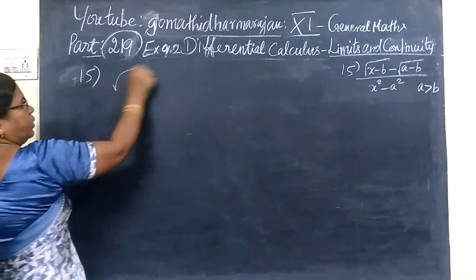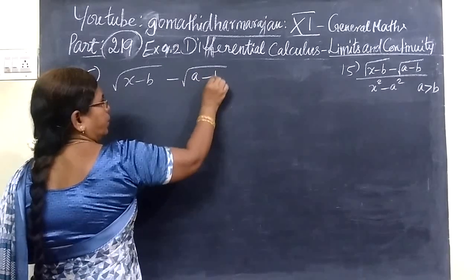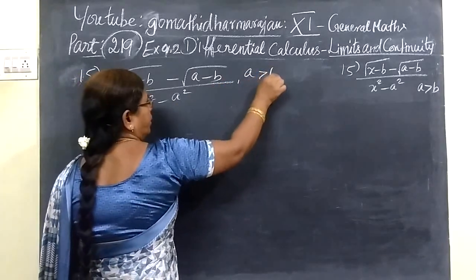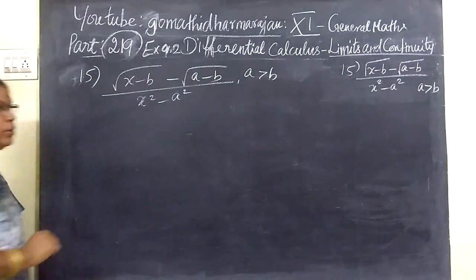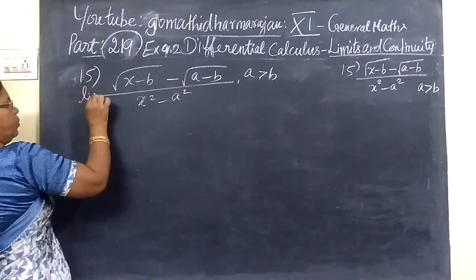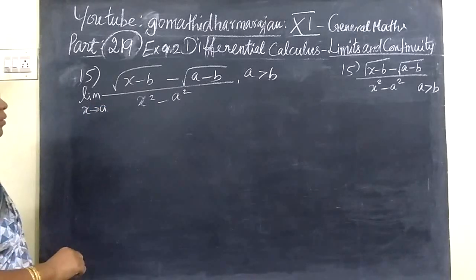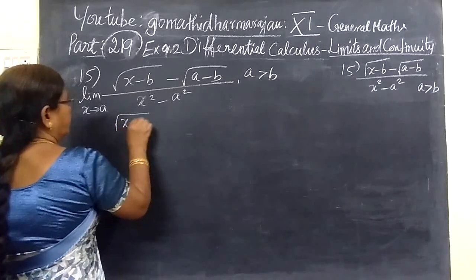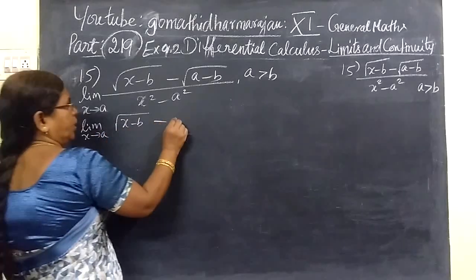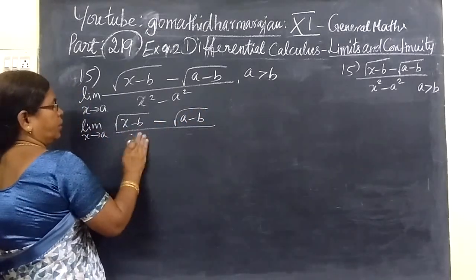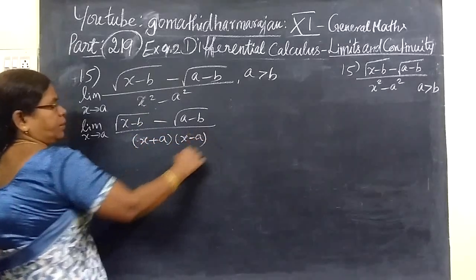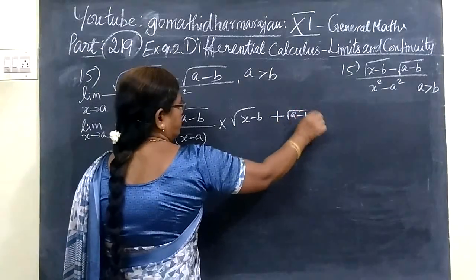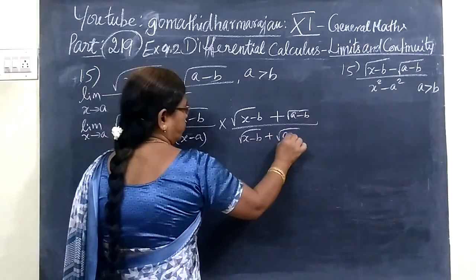What do you write, 15th question there. Here are given X minus B, root of A minus B, by X squared minus A squared. So value A greater than B. Here limit X tends to A. Limit X tends to A. Taking the conjugate, root of X minus B. Then limit X tends to A, minus root of A minus B. This is. And this can be written X plus A into X minus A, X minus A. So X minus B plus A minus B. Conjugate means you are taking the opposite, then plus root of A minus B.